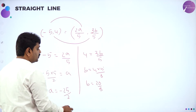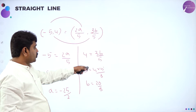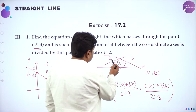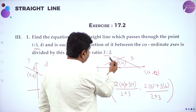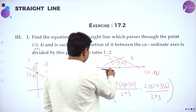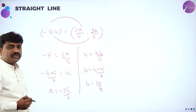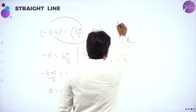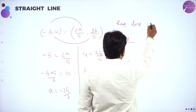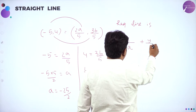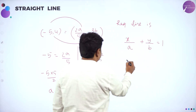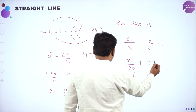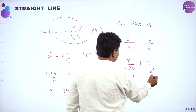So we got B equals 20 by 3 using the section formula, where Y2 gave 2 times 0 plus 3 times B. Now that we have A and B, use the intercept form of a line. The required line in intercept form is X by A plus Y by B equals 1. So X divided by (minus 25 by 2) plus Y divided by (20 by 3) equals 1.